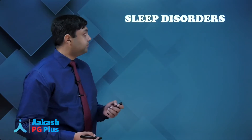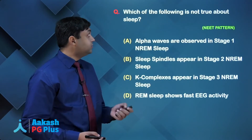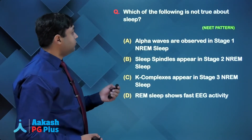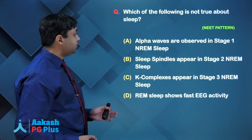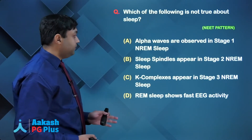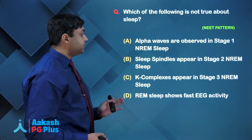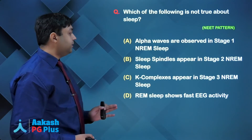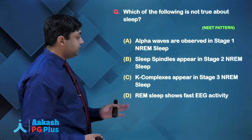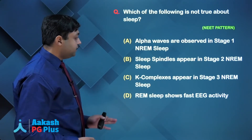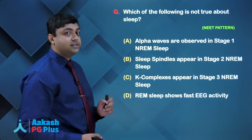Hello friends, in this part we will be talking about sleep and sexual disorders. The first question is: which of the following is not true about sleep? Alpha waves are observed in stage 1 NREM sleep, sleep spindles appear in stage 2 NREM sleep, K complexes appear in stage 3 NREM sleep, and REM sleep shows fast EEG activity.